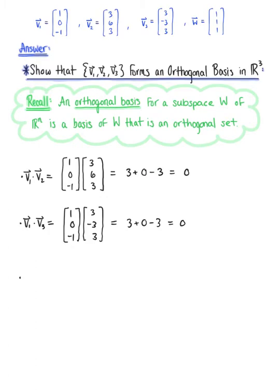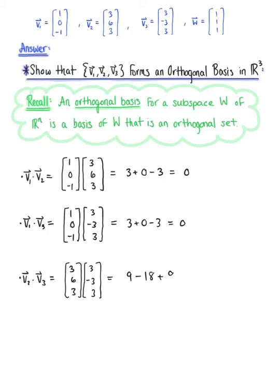Last but not least, we take the dot product of vector v sub 2 with vector v sub 3. V sub 2 has components 3, 6, 3, and we are dotting this with vector v sub 3 with components 3, negative 3, 3. Computing this dot product, we have 9 minus 18 plus 9, which equals 0.